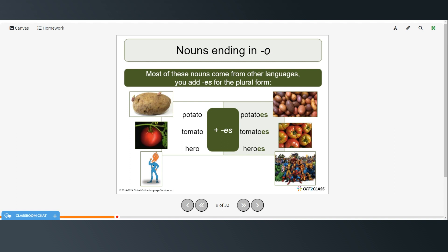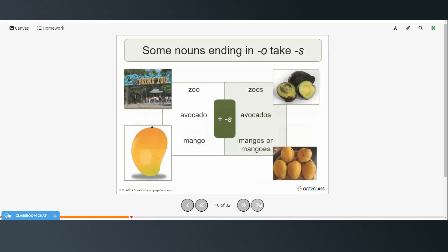Alright, then if you have a noun that ends in O. Some of these nouns come from other languages. And so we also add an ES for the plural form for nouns that end in O. So potato becomes potatoes with an ES. Tomato is tomatoes with an ES. And hero is heroes with an ES. And then there are some exceptions though to that rule where some nouns ending in O just take an S. And you'll just need to memorize these. So zoo, we just add an S, zoos. The same with avocado. We would just add an S. Mango is one that can go either way. You can add either an S or an ES and both are correct.